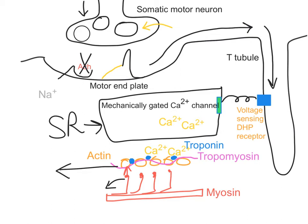The other thing that must happen is we must get rid of this calcium — we have to get it back into the sarcoplasmic reticulum. This is going to require energy because we are going from a relatively low concentration of calcium in the sarcoplasm to a relatively high concentration of calcium in the sarcoplasmic reticulum. So this is going to involve active transport — a calcium ATPase.